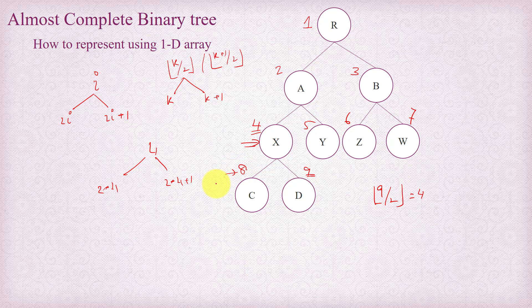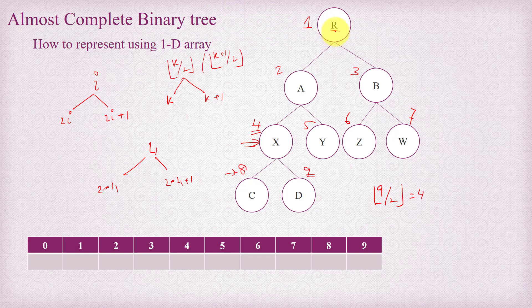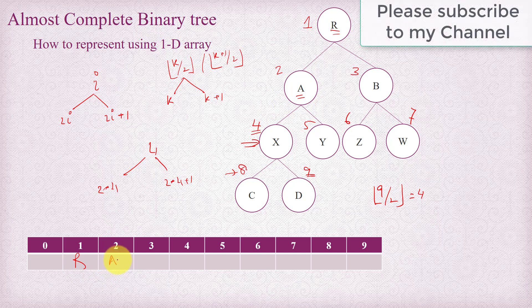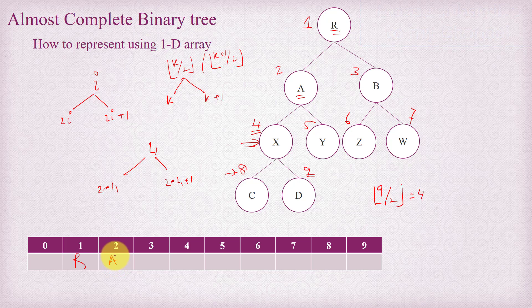Considering these numbers as the index of the array, we can map each of the node contents into a one dimensional array. So r goes to index 1, a goes to index 2. We are using those numbers as the index for the array and mapping the content of each node to that index. So index 3 gets b, and we assign x, y, z, w, c, and d to the remaining indices.